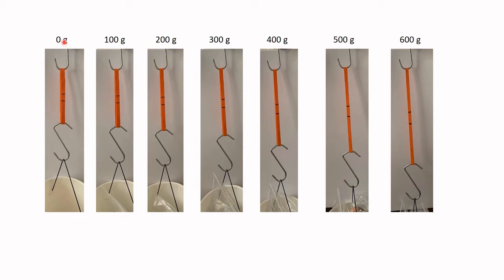So here I start with zero grams in the cup, so the cup is empty. Then I take little baggies full of coins and I add 100, 200, 300, 400, 500, 600 grams, and we see not very surprisingly that the rubber band gets longer.